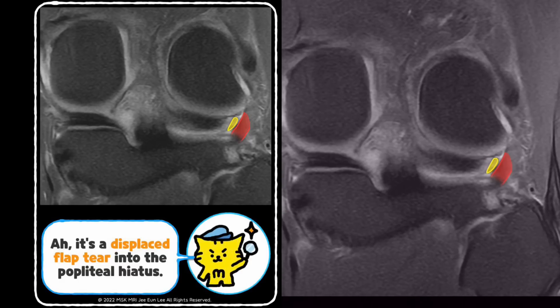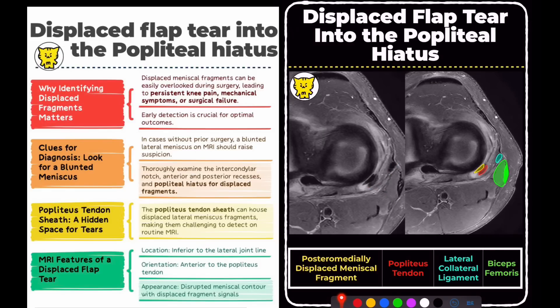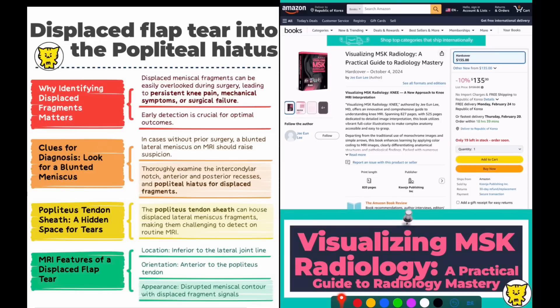Let's break this down further. In this case, the yellow structure represents a posteriorly displaced meniscal fragment, which is located anterior to the popliteal tendon, marked in red. Additionally, adjacent structures such as the lateral collateral ligament and the biceps femoris tendon can also be visualized. This is a similar case to the one shown in my book, Visualizing MSK Radiology.